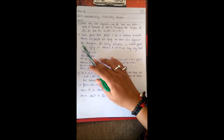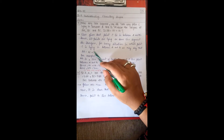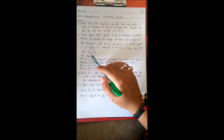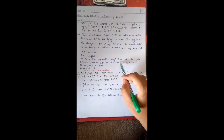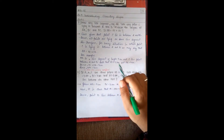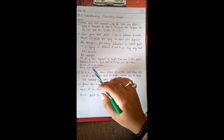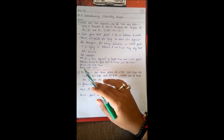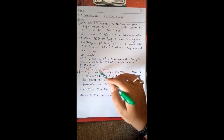Since point C lies in between A and B, all points are lying on the same line segment AB. Therefore, for any situation in which point C is lying in between A and B, we may say AB = AC + CB. For example, AB is 7 cm, AC = 3 cm and CB = 4 cm, so AC + CB = 7 cm = AB. Therefore AB = AC + CB is verified.